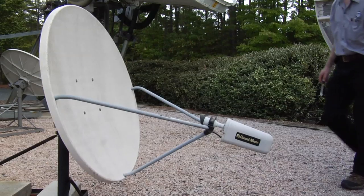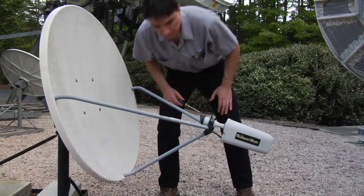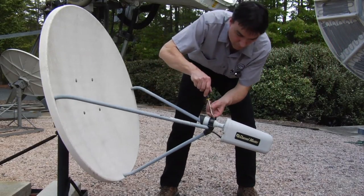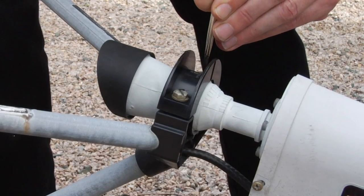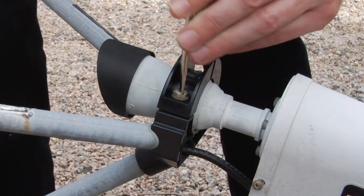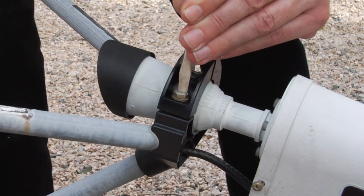Here's a procedure for how to adjust the polarization. First, you'll need to loosen the mount for the feed horn. Don't remove the screws, just loosen them enough so the feed horn can be turned by applying gentle pressure.